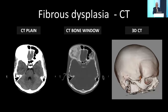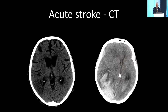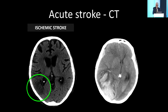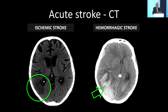3D CT is also useful, not only in fibrous dysplasia but in craniofacial dysostosis to plan surgeries. One very common use of CT is strokes, where you can act very quickly and decide on treatment depending on whether it's ischemic or hemorrhagic. You can see an area of hypodensity and effacement of the sulci indicating ischemic stroke, or a hyperdense lesion with complete effacement indicating hemorrhagic stroke. CT is very good for this quick diagnosis.